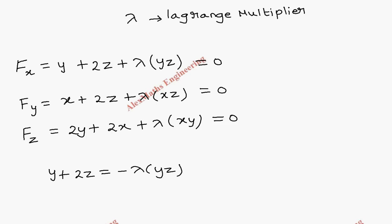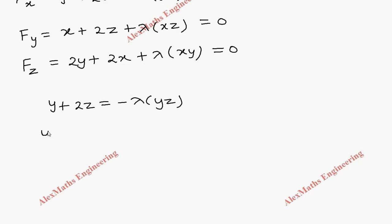Now if you divide by yz on the other side, so (y + 2z)/yz = -λ. If I divide individually, y and y will get cancelled so 1/z. If I divide 2z by yz, z cancels so remaining 2/y. This is -λ.